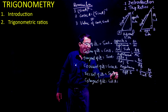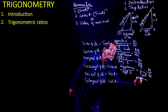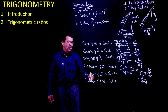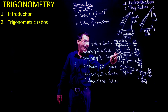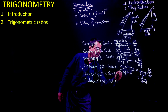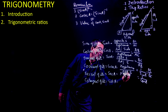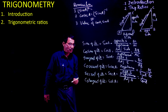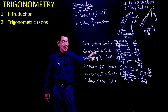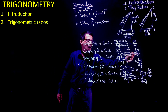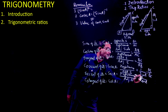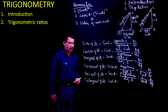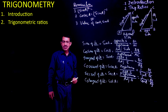Sec A is 1 upon cos A. Since cos A was adjacent upon hypotenuse, I can write sec A as hypotenuse divided by adjacent side — that is the inverse of cos. So it was AB upon AC for cos A; now sec A is AC upon AB.